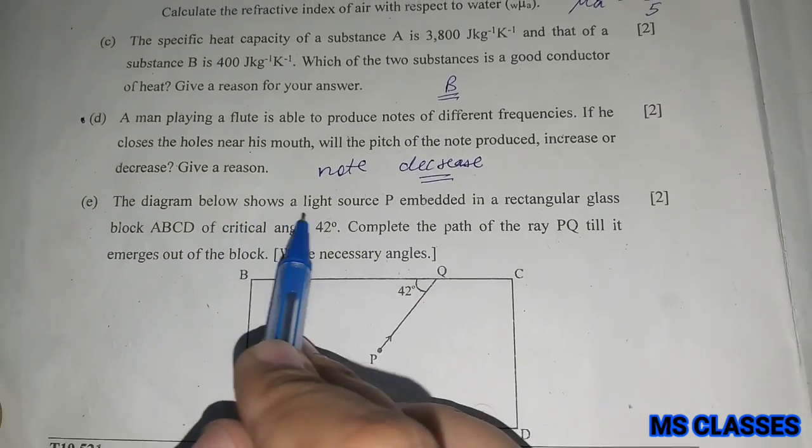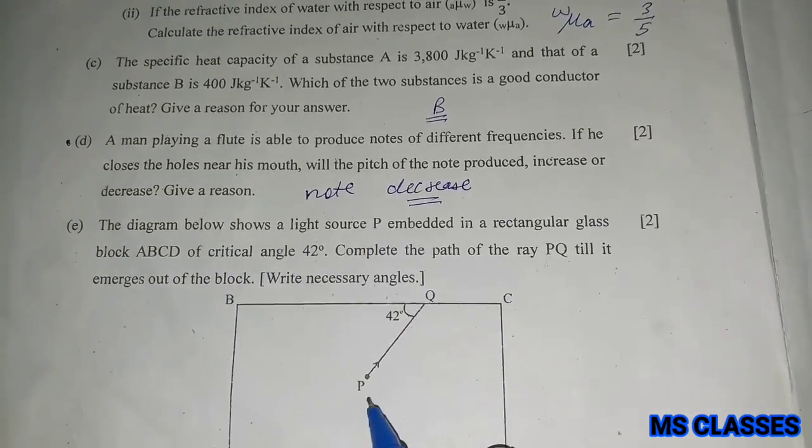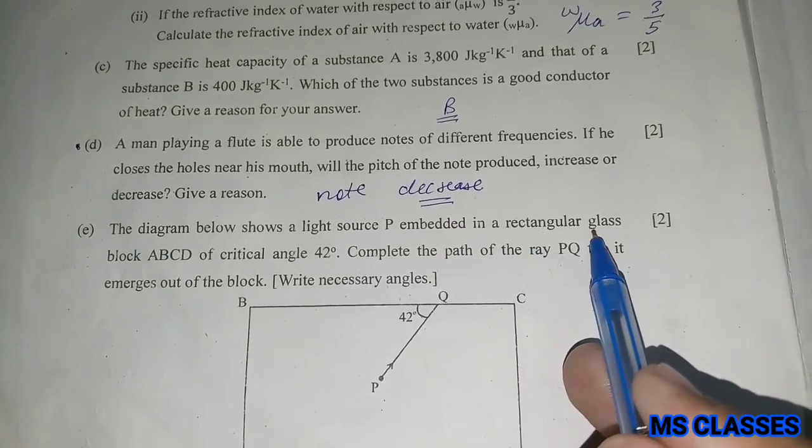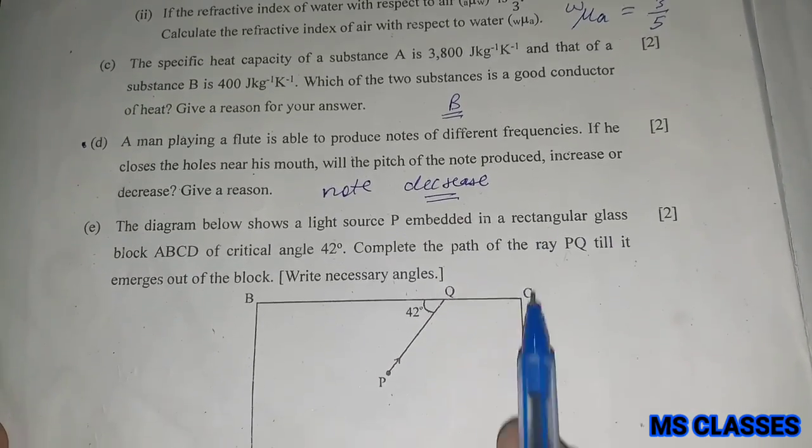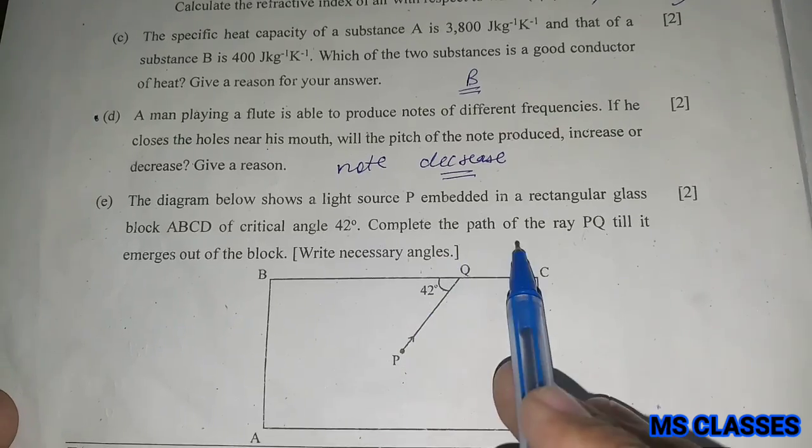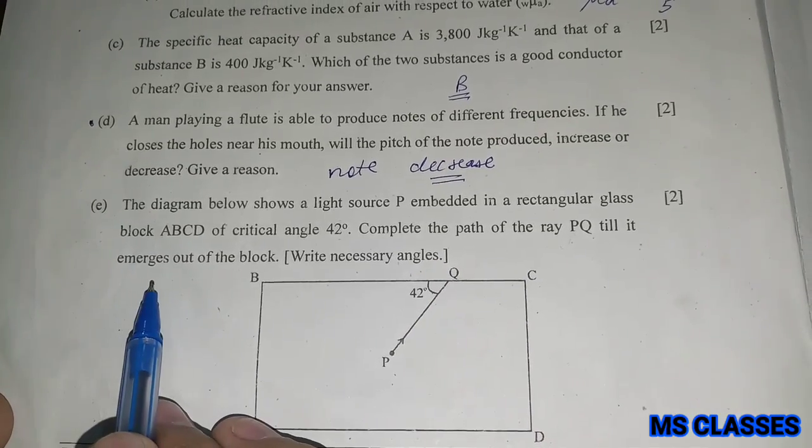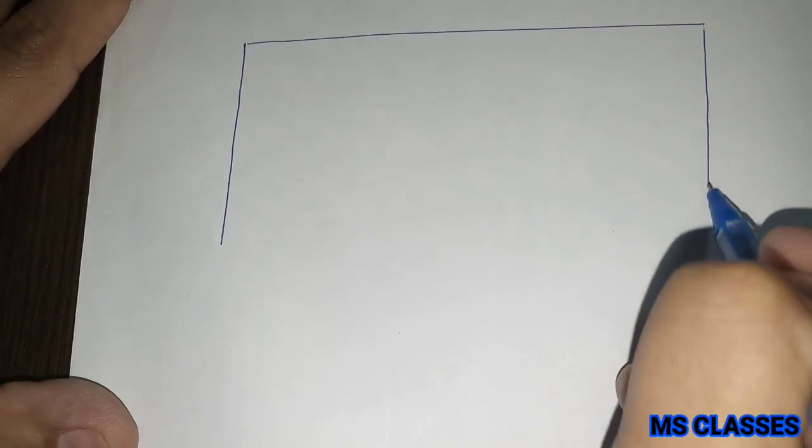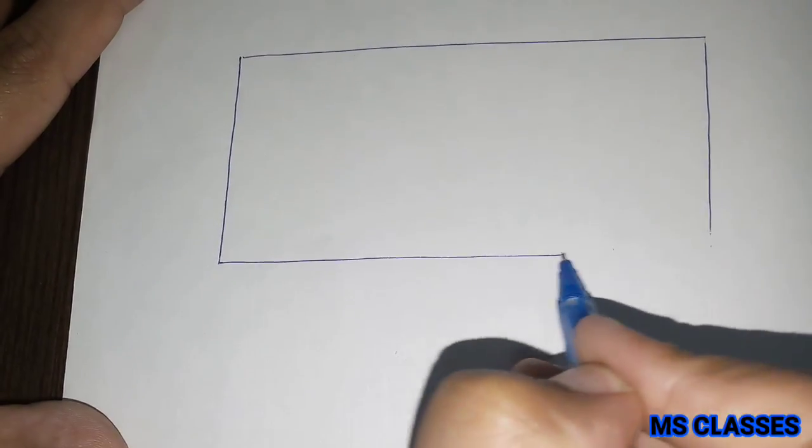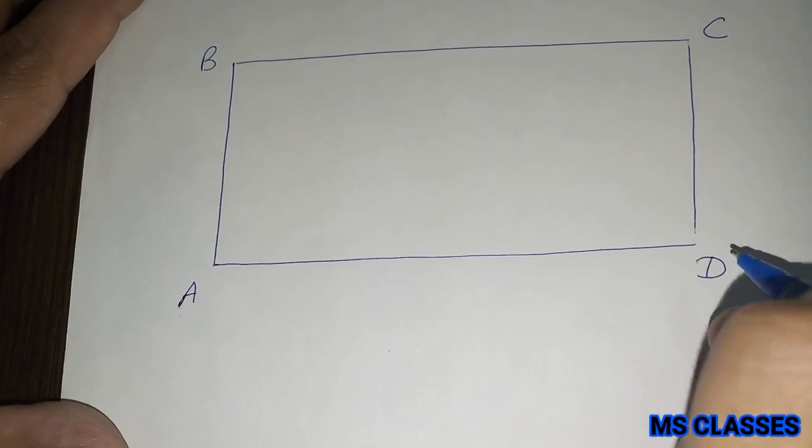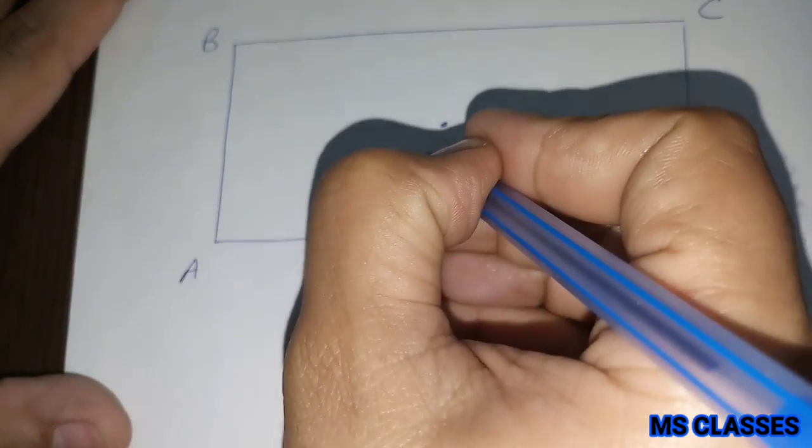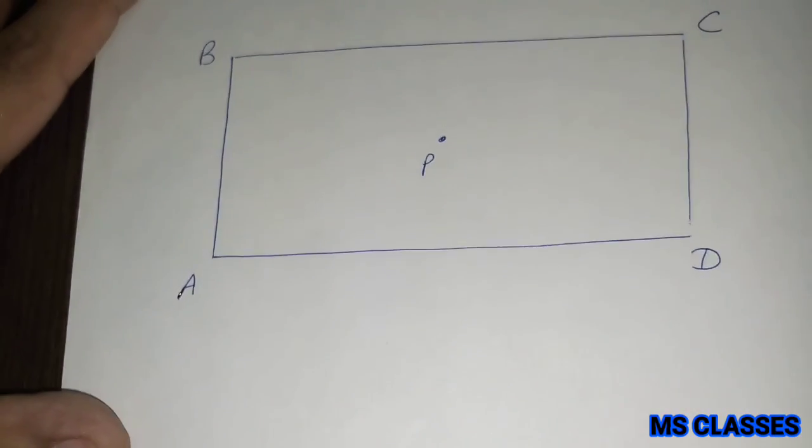The diagram below shows a light source P embedded in a rectangular glass block ABCD of critical angle 42 degrees. Complete the path of the ray till it emerges out of the block. The rectangular block is given and P is the point which is embedded.